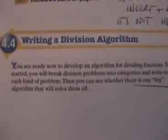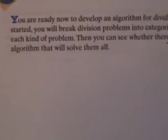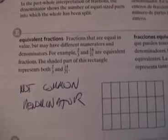Guess what, you get to write a division algorithm. Then you can see if there's one big algorithm that will solve them all. It sounds like something from the Ring. So here we go, it's interesting. Now, if you look for the, here we go, there's denominators in the glossary, but common denominator, lowest common denominator is not there. There's equivalent fractions, but equivalent fraction is not the same as a common denominator.